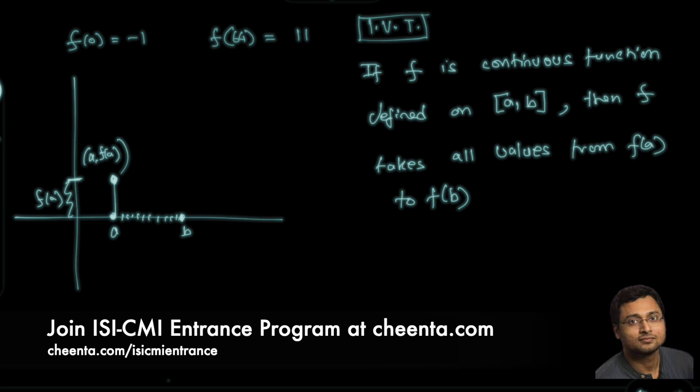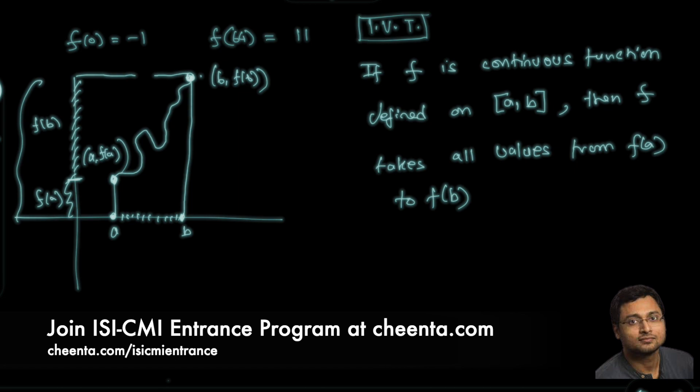And suppose f(b) is something like this. This is (b, f(b)). This height is f(b). The idea is the function has to climb from this to this height, from f(a) height to f(b) height. So all the values between f(a) and f(b) will be assumed no matter how you draw the function. Because for some value of x between a and b, every value from f(a) to f(b) will be assumed. That means the function will get to that particular value. So this is the IVT.